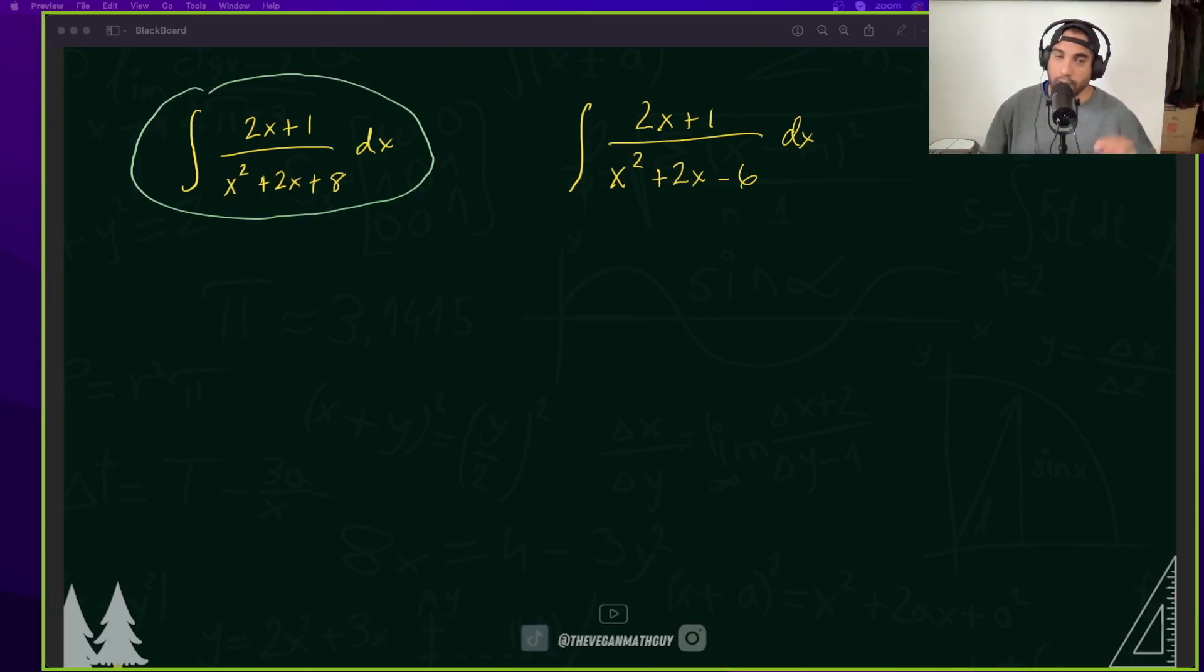No partial fraction decomposition, and it looks like the bottom could almost be used as our u. Because when I take my du here, I get 2x plus 2, which is almost what we have in the numerator. So this is where we're going to have to kind of rearrange a couple things.